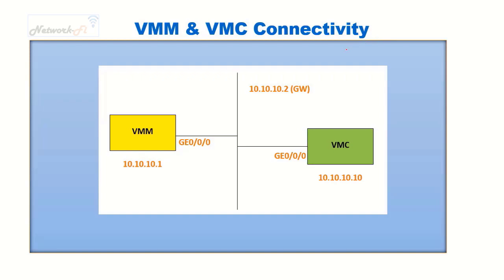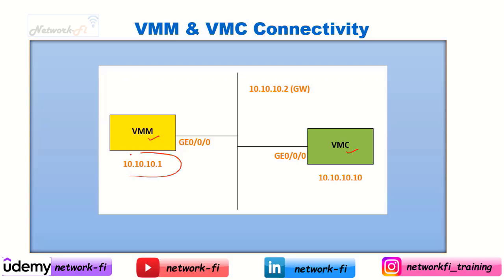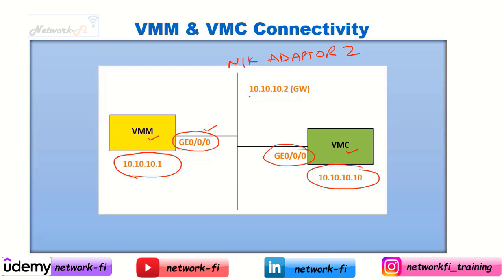Now let's talk about the connectivity of Virtual Mobility Master and Virtual Mobility Controller. In our lab setup, both are in the same LAN. The IP address of Virtual Mobility Master would be 10.10.10.1 and the IP address of Virtual Mobility Controller would be 10.10.10.10. Interface gig 0/0/0 of both controllers will be connected with network adapter 2, and the gateway will be 10.10.10.2, which will be our VMnet 1. This is a very small lab setup — in practice, the Mobility Master and Mobility Controller would not be in the same LAN.